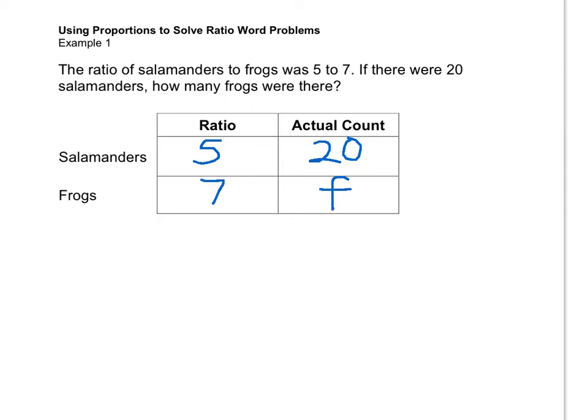Remember that order is very important when we talk about ratios and proportions. So in this problem, we're looking at a ratio of salamanders to frogs, 5 to 7. It's really important that you don't reverse these. We're not given the actual number of frogs, that's what we're looking for.